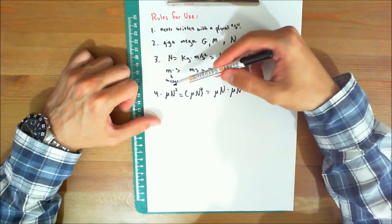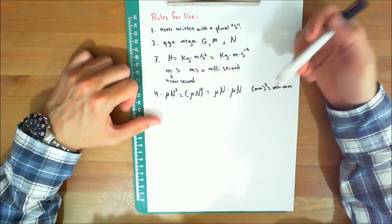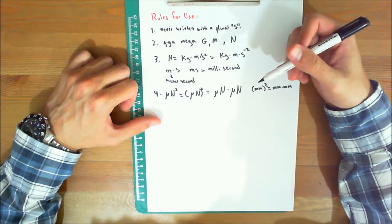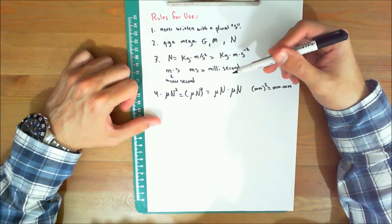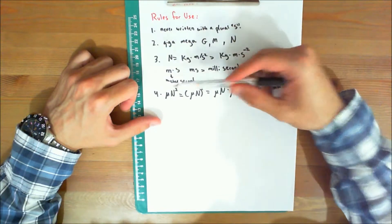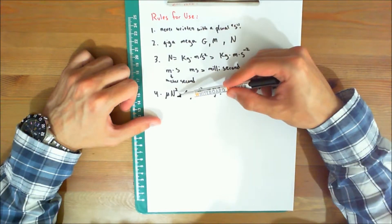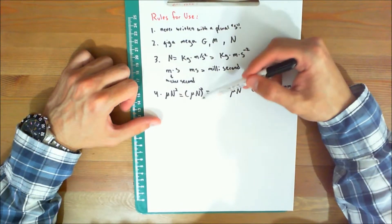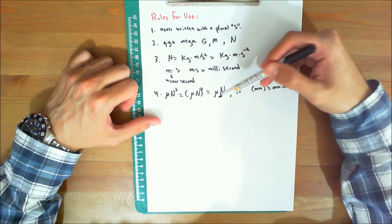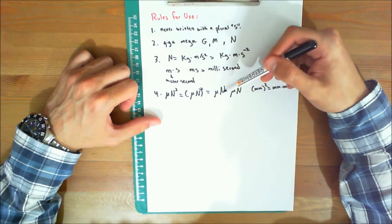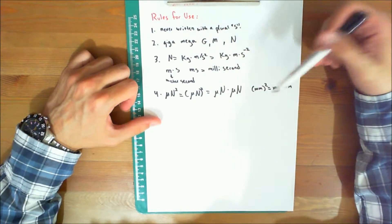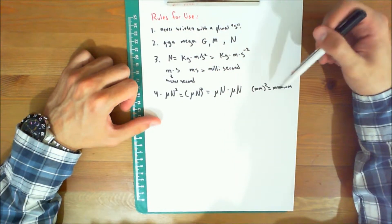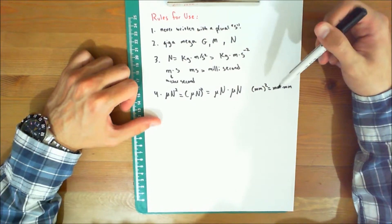Number four: the exponential power represented for a unit having a prefix refers to both the unit and its prefix. For example, micronewton squared equals micronewton times micronewton. Likewise, millimeter squared equals millimeter times millimeter.